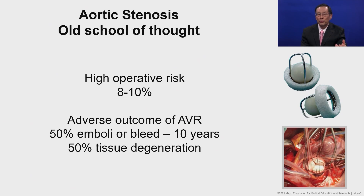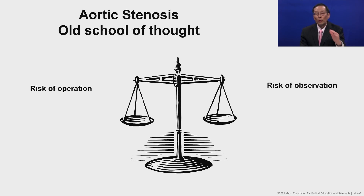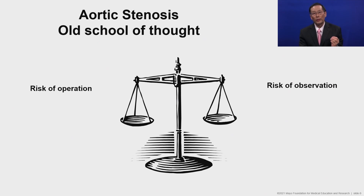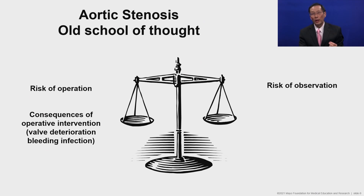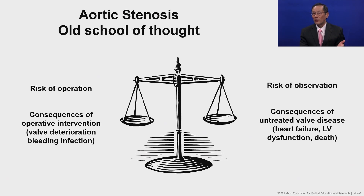At 10 to 15 years, there was a 50% chance of an embolic event or a bleed with a mechanical valve, and about 50% of tissue valves would degenerate at 10 years. Whenever we think about when to intervene on a patient with valvular heart disease, you have to weigh the risk of the operation versus the risk of observation — the consequences of operative intervention and long-term valve outcomes versus the consequences of untreated valvular heart disease.